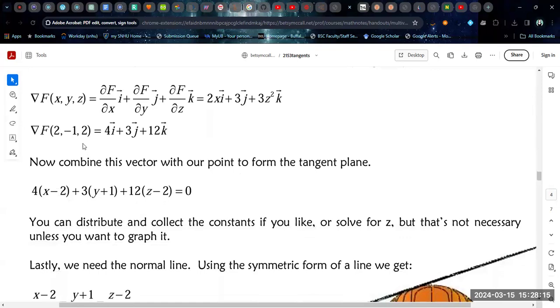And then we're going to evaluate that gradient at the given point. And when we plug in X equals 2, Y equals negative 1, and Z equals 2, we end up with this vector, 4, 3, 12.